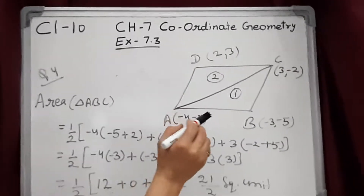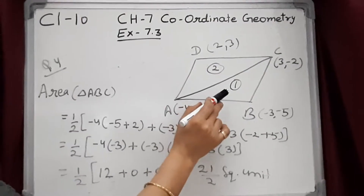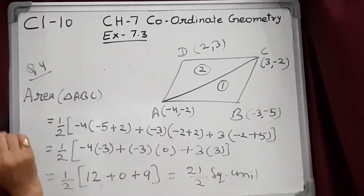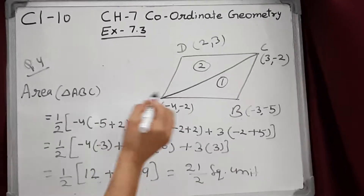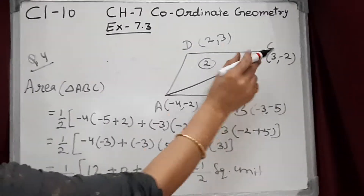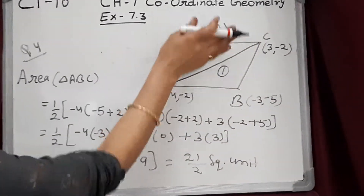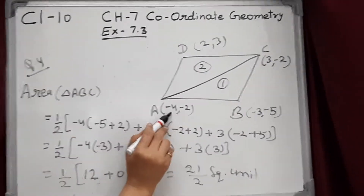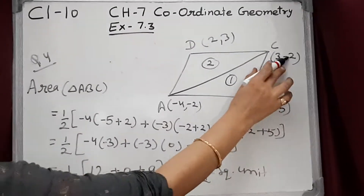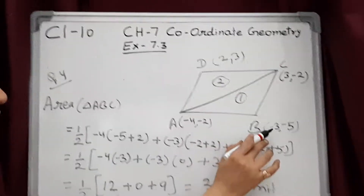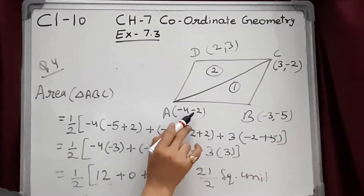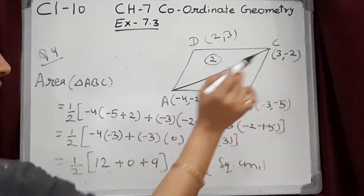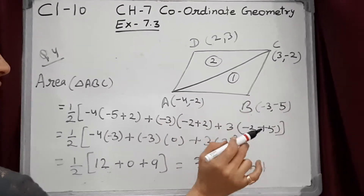First of all, find the area of triangle ABC. Using the formula: half into x₁(y₂ − y₃) + x₂(y₃ − y₁) + x₃(y₁ − y₂), putting in the three coordinates of A, B, C.